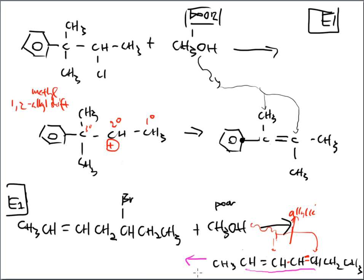If asked to name this major product: counting the carbons gives 7, and there are two double bonds, so it's a heptadiene. The double bonds are at carbons 2 and 4, giving 2,4-heptadiene. So 5-bromo-2-heptyne reacting with methanol in an E1 elimination reaction gives 2,4-heptadiene as the major product, with the carbocation rearranging to form a delocalized conjugated network.